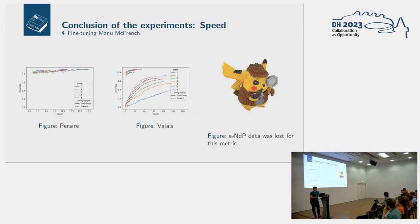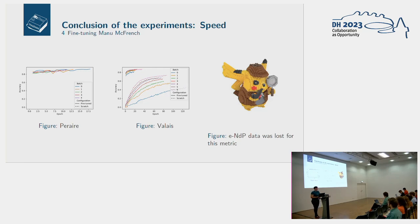For the speed results: for Perer, we never reached a model with good results. For Valais — to explain the chart: accuracy is on the vertical axis, the number of epochs at the bottom, and the different lines correspond to different subset sizes. Fine-tuning is always faster than training from scratch. Sometimes you need double the number of epochs to reach the same peak when training from scratch compared to fine-tuning, and it can go up to three times more in the worst case. Unfortunately we lost the data for the ENDP dataset as we were unable to re-run it due to the time required.